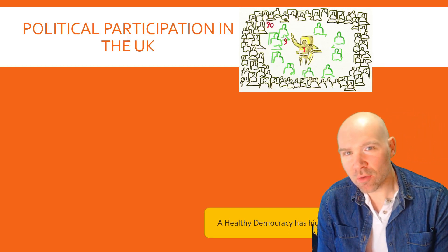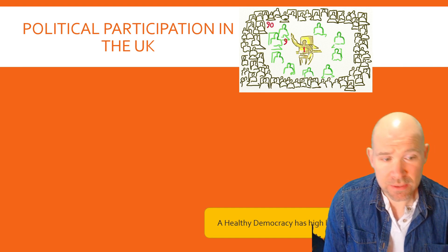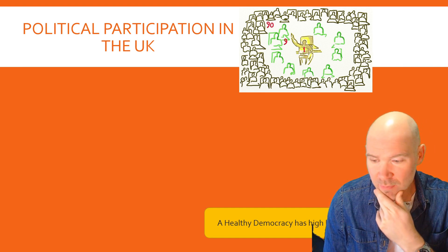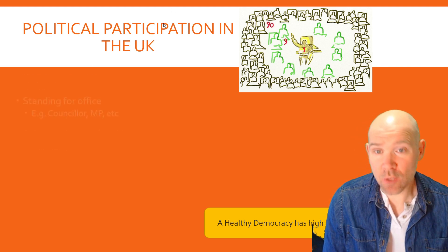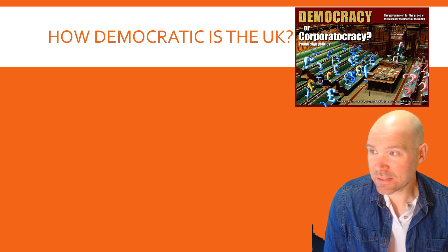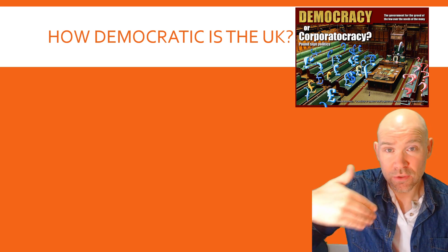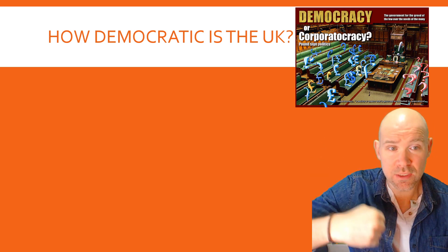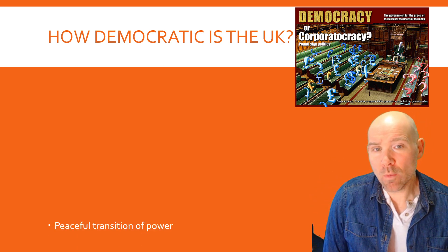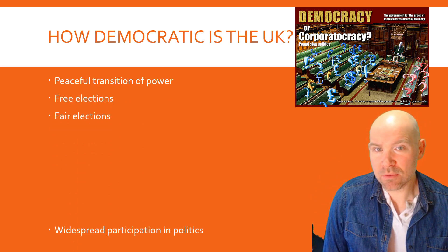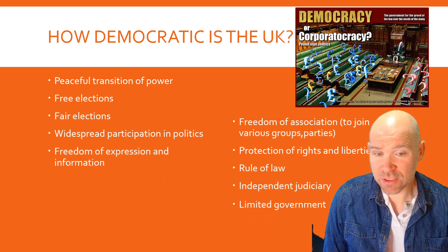Greetings. Welcome to this lecture on political participation in the UK. This is the third lecture on the democracy module in UK politics paper one. Over the next few lectures and topics, we're going to be asking the question about how democratic is the UK. We have identified that the UK is a representative democracy with some direct democracy elements from time to time. We're going to be talking about whether the UK is in fact a successful democracy or whether it has issues.